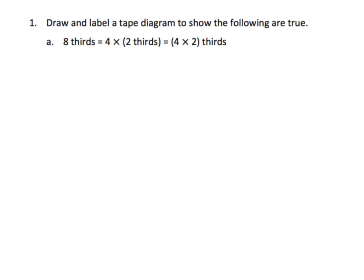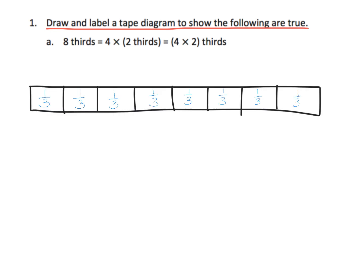The directions say: draw and label a tape diagram to show that the following are true. We start with eight-thirds — I have drawn a picture of one-third, eight times, so I have eight-thirds here. Now we want to show that these eight-thirds are the same thing as four groups of two-thirds.